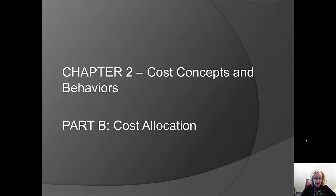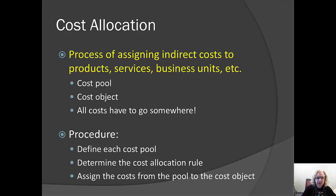We will be talking about the process of cost allocation. So what is cost allocation? It means finding a method to assign indirect costs to the various things that we do.